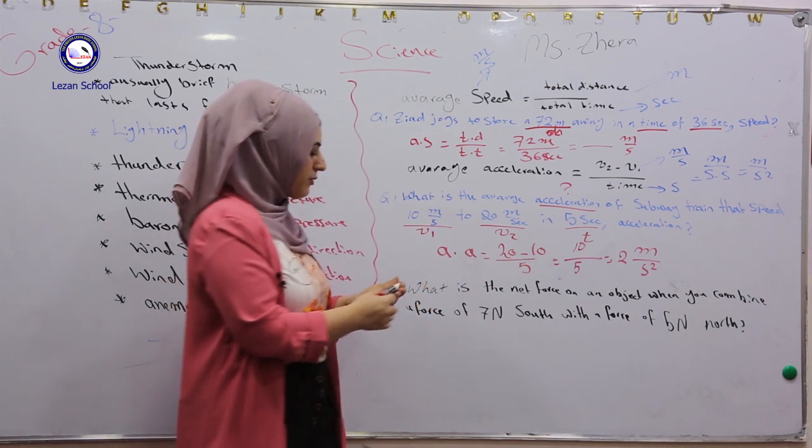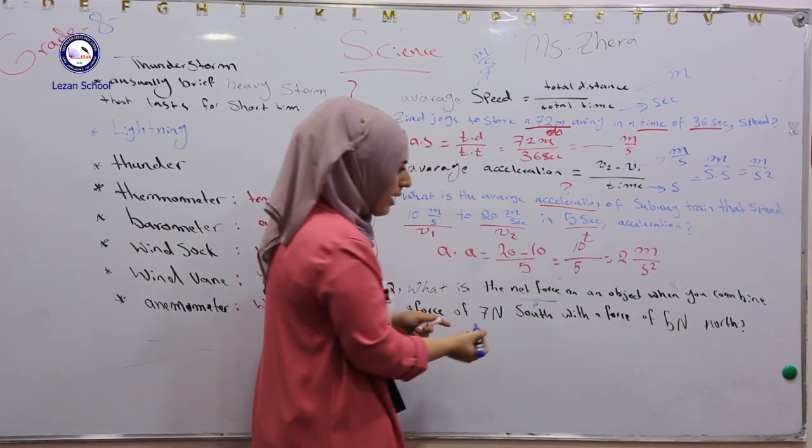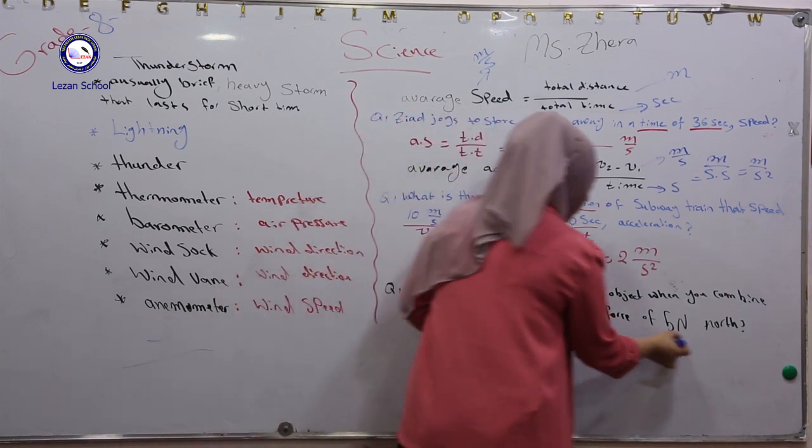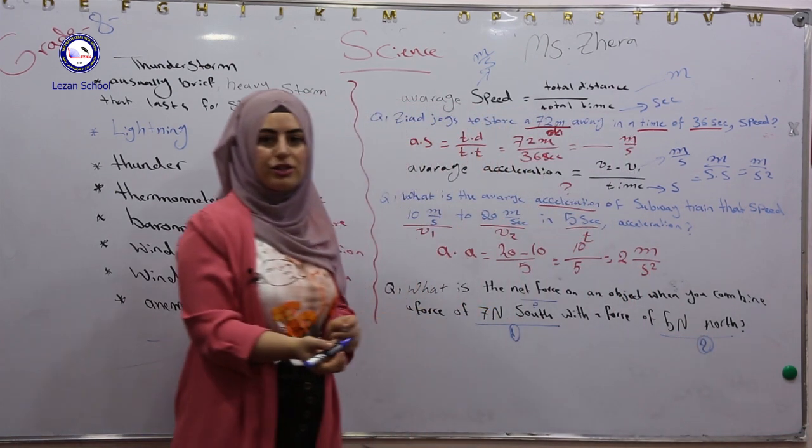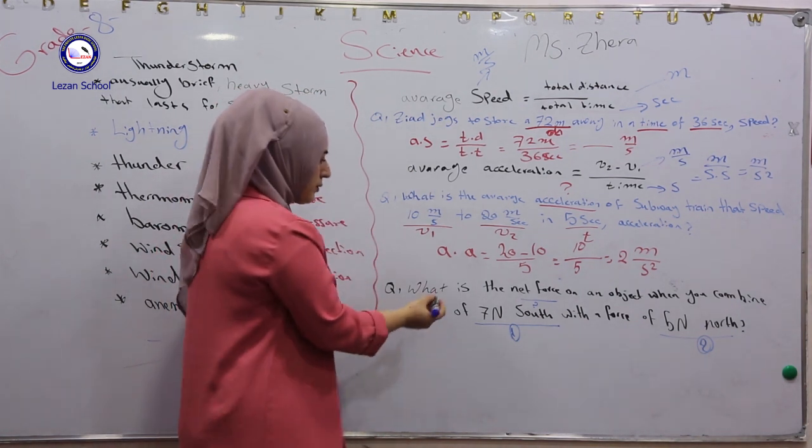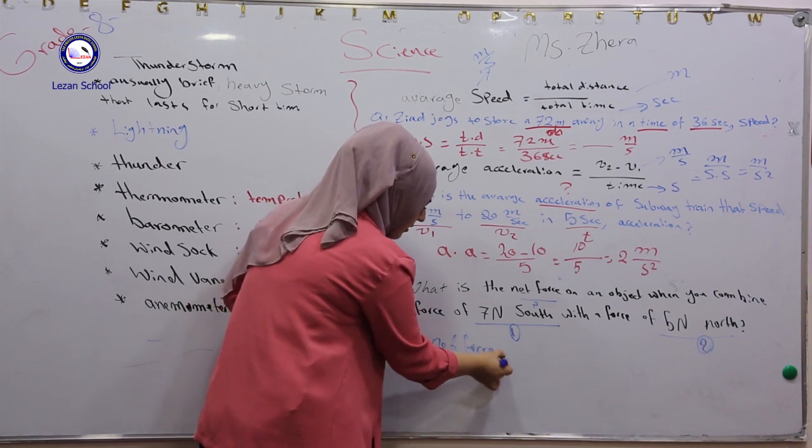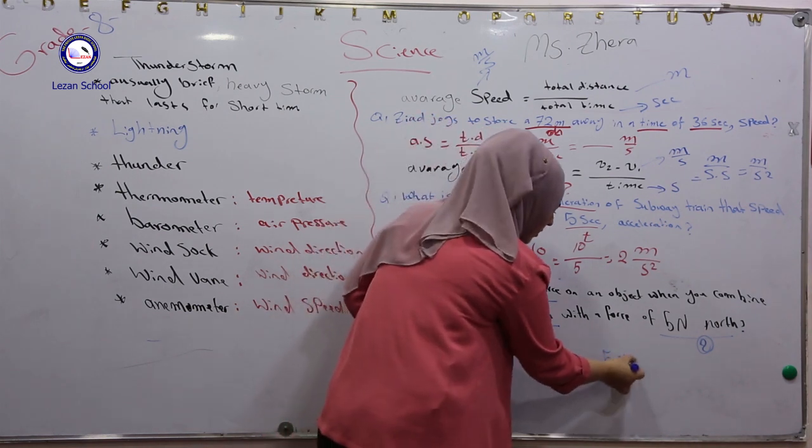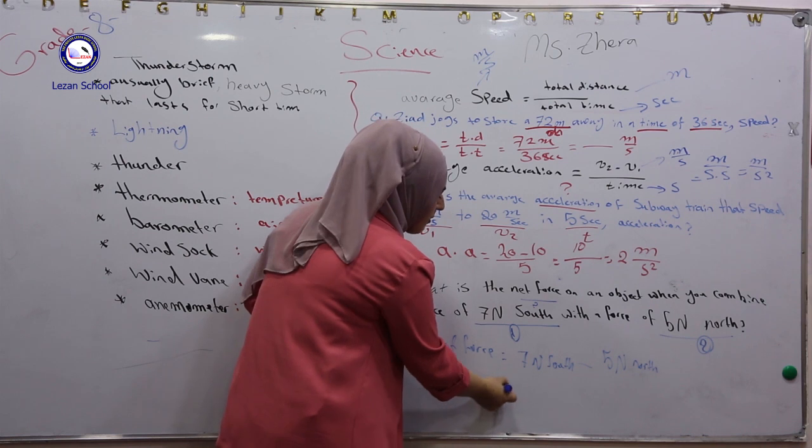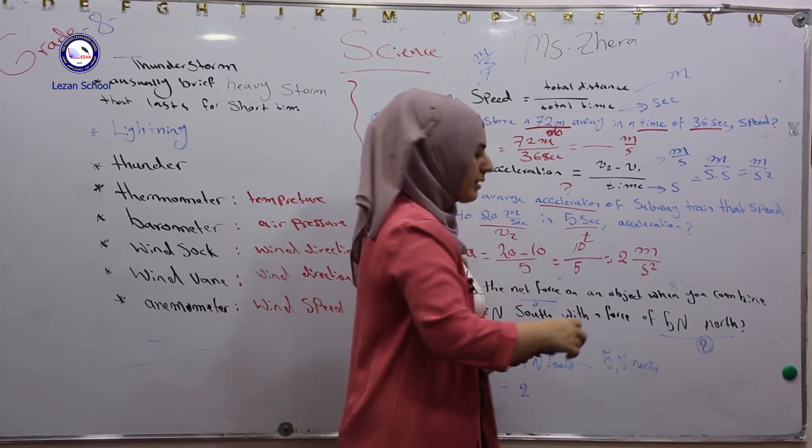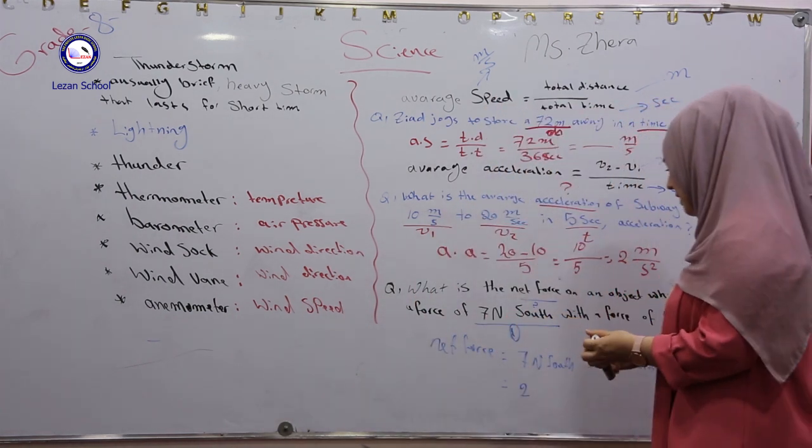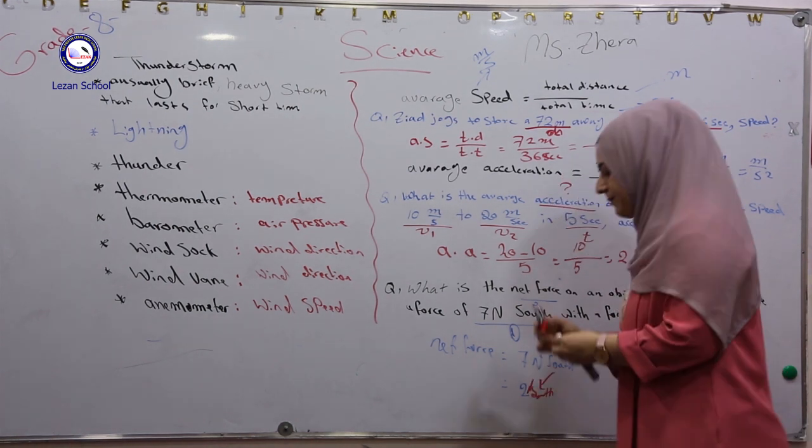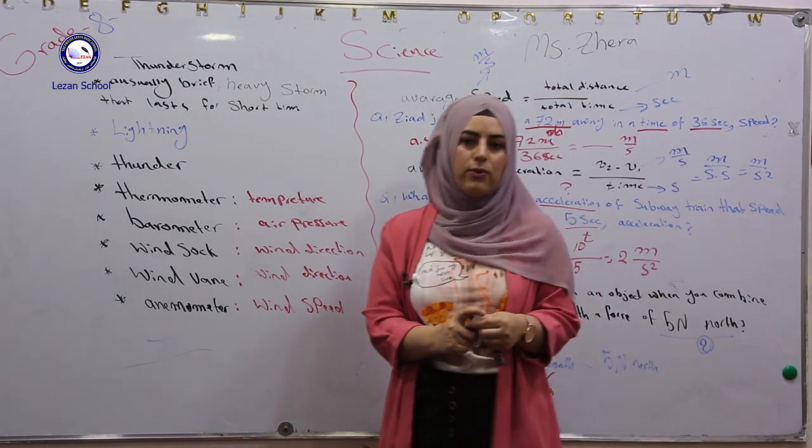So in this one, I'm talking about what is the net force. Find out net force for two forces: 7 newtons south, this is the first force, and 5 newtons north. We have two forces here in different directions. I have to know each force in which direction. So you say net force equals the greater one, 7 newtons south, minus 5 newtons north. You say 7 minus 5 equals 2. Which direction? The greater one is in the south direction. 7 minus 5 equals 2 in the south direction. Don't forget the unit: 2 newtons.